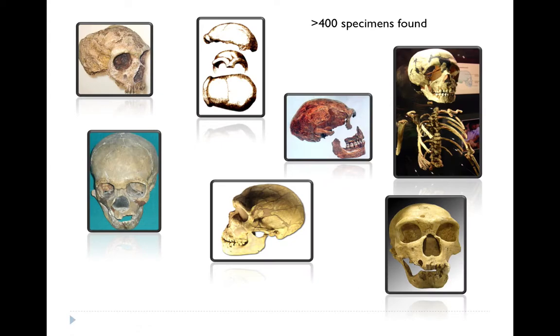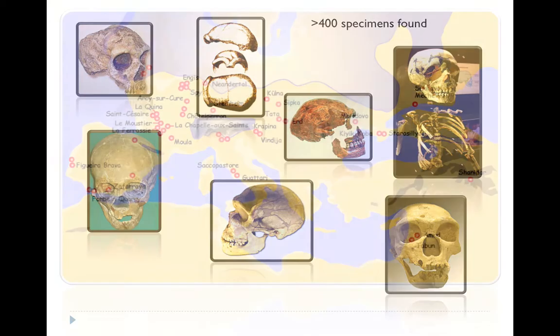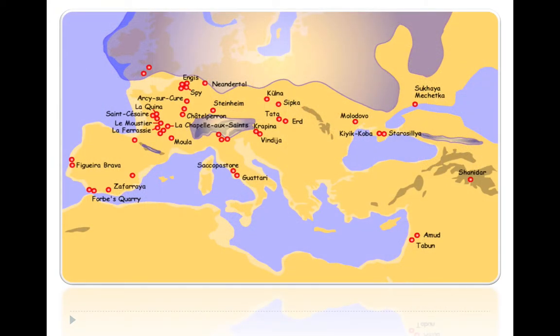Over the 150 years or so since the discovery, there are now over 400 specimens of Neanderthal bones from a variety of sites across Europe and Asia. They are found all over Europe and in parts of the Levant and Middle East as well. England is at the most northerly extent of where Neanderthals lived, and the Neander Valley itself is right at the northern limits of their range, with ice sheets occupying much of that part of Europe.